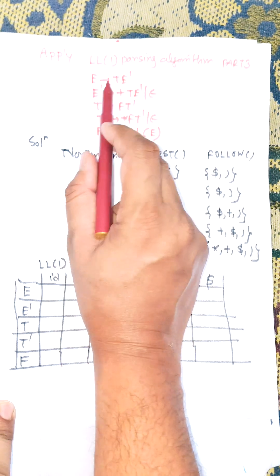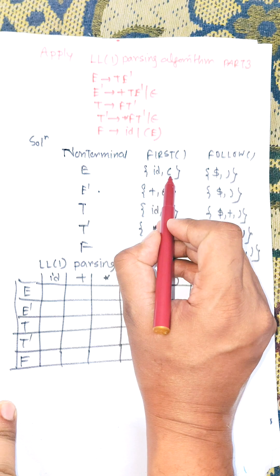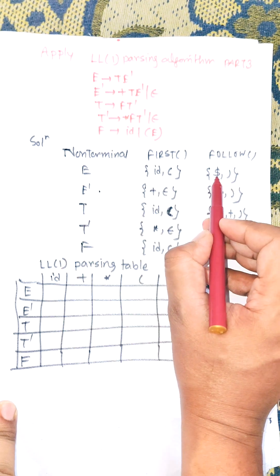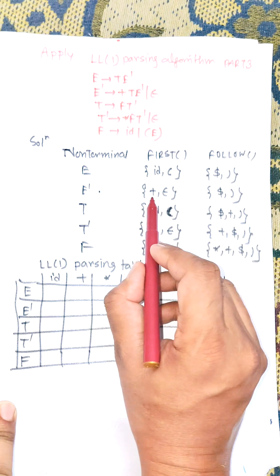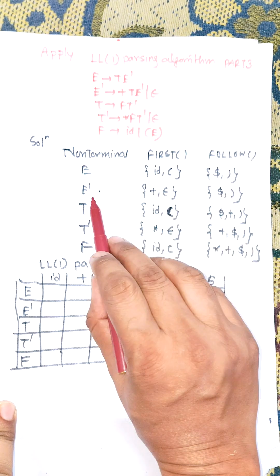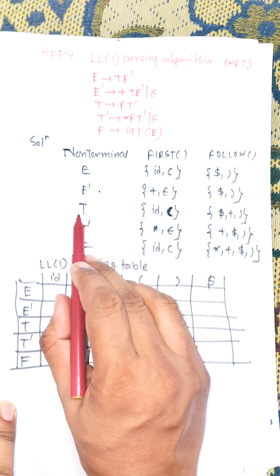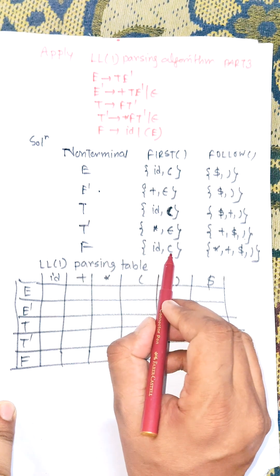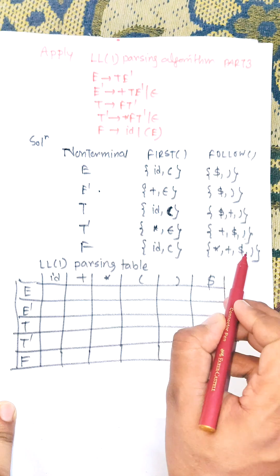First of all, we need to find the FIRST and FOLLOW sets. FIRST(E) is {id, '('} and FOLLOW(E) is {$, ')'}. FIRST(E') is {+, ε} and FOLLOW(E') is {$, ')'}. FIRST(T) is {id, '('} and FOLLOW(T) is {*, +, $, ')'}.